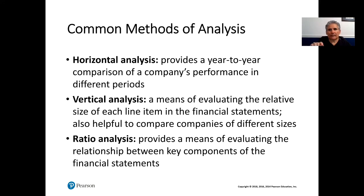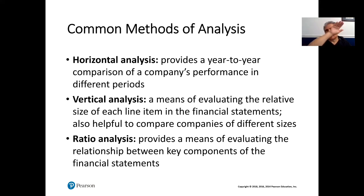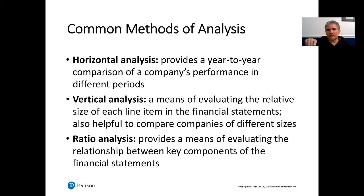In vertical analysis, you may have sales at the very top and net income at the very bottom, and what you're doing is comparing net income to sales — so this is a ratio or vertical analysis, comparing different line items on the financial statements to one another. Ratio analysis provides a means of evaluating the relationship between key components of the financial statements. Once we go to ratio analysis, we may be looking at something on the income statement and seeing its relative size to something on the balance sheet.